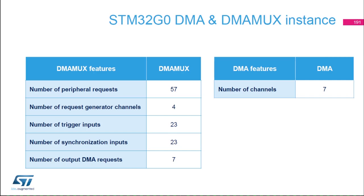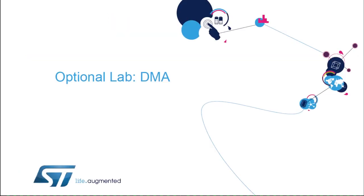Let's recap the features of the DMA and DMA-MUX inside the STM32G0. The DMA-MUX has 57 peripheral requests mapped to seven DMA channels, four request generator channels, 23 trigger inputs, and 23 synchronization inputs. For the DMA features, it offers seven channels.